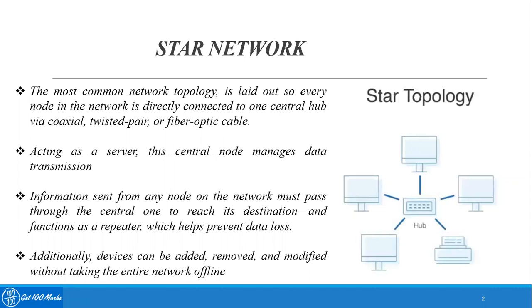Every node in the network is directly connected to one central hub via coaxial, twisted pair, or fiber optic cable. From the diagram you can make out every other system in the network is connected to the central hub or a central server. The central hub acts as a server and it manages the complete transaction.